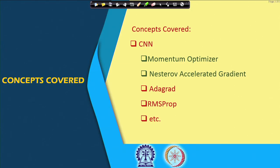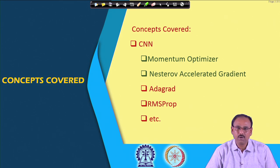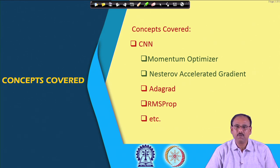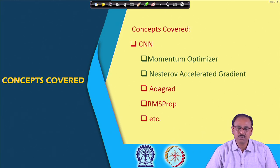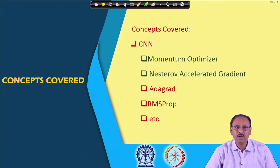In our previous class we talked about two optimization algorithms: momentum optimizer and Nesterov Accelerated Gradient (NAG). In today's lecture we will discuss the drawbacks of both, and see how those drawbacks are addressed in other algorithms like Adagrad, RMSprop, Adadelta, and Adam. We will discuss these algorithms one after another and examine their relative performance across different challenging error surfaces.